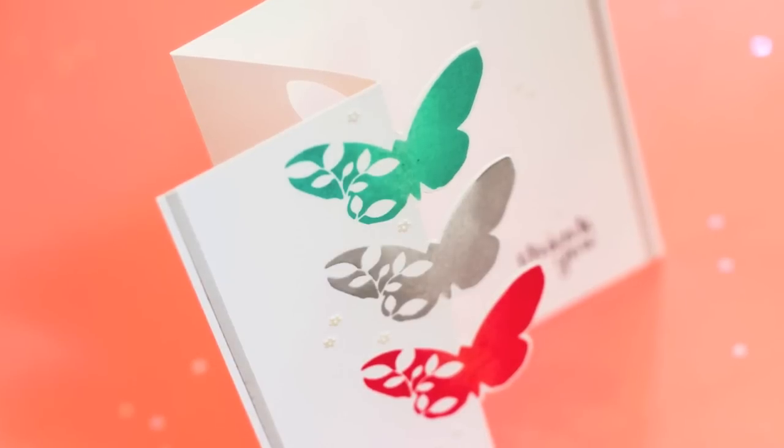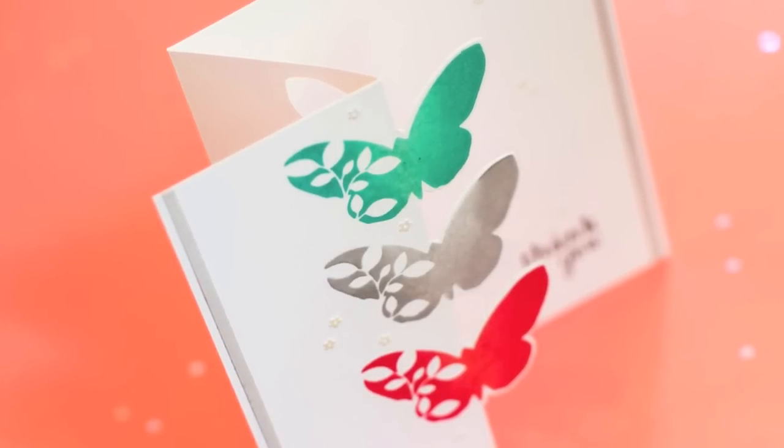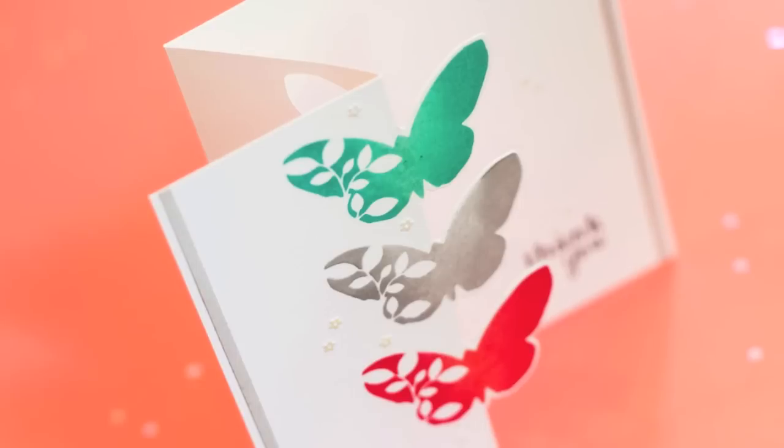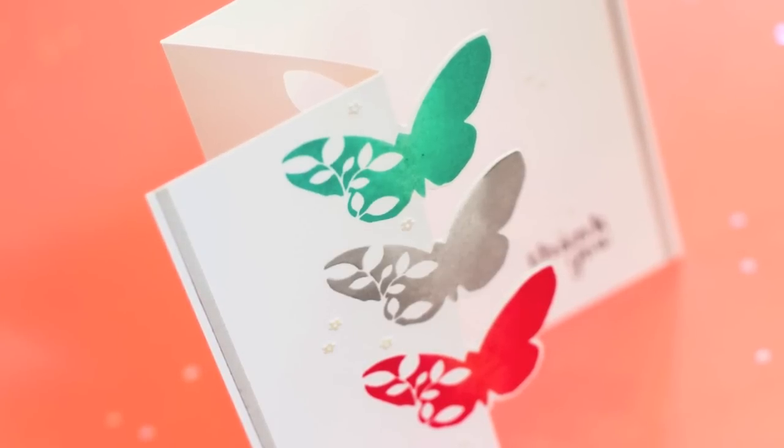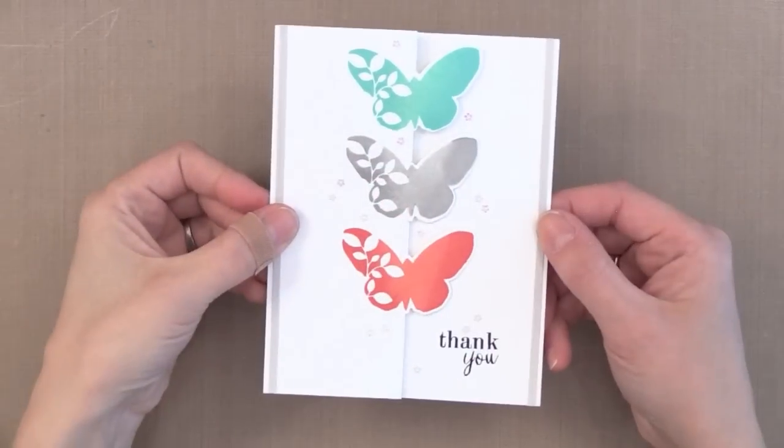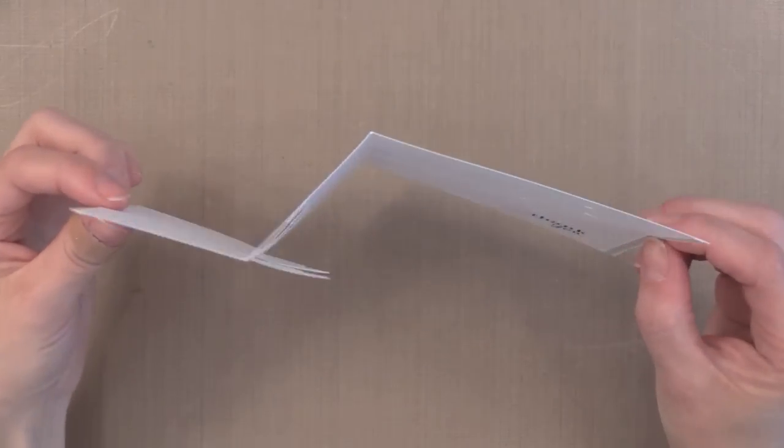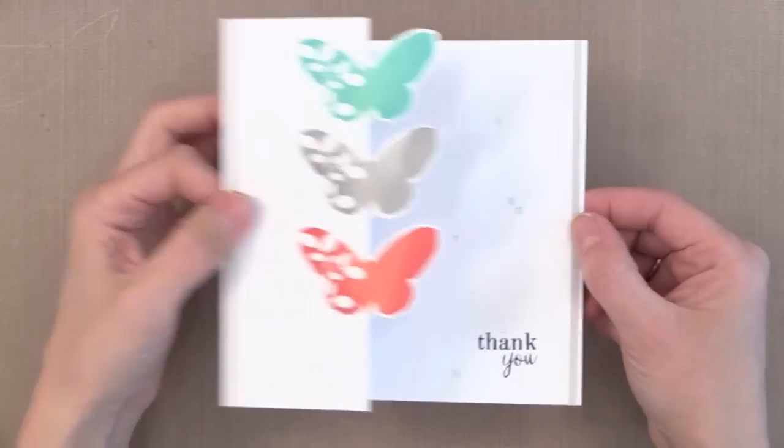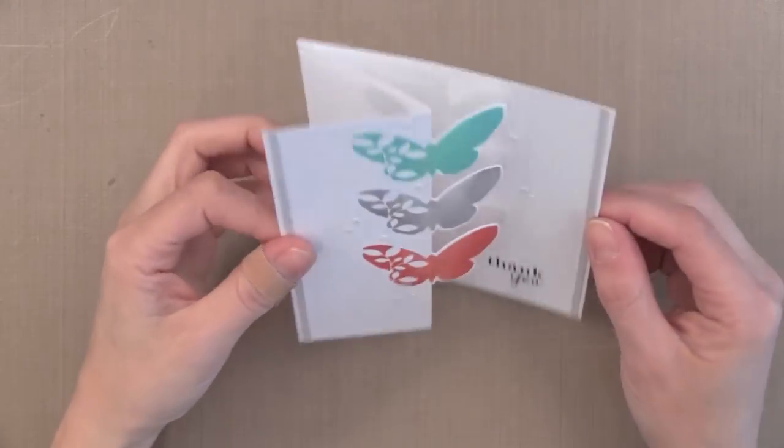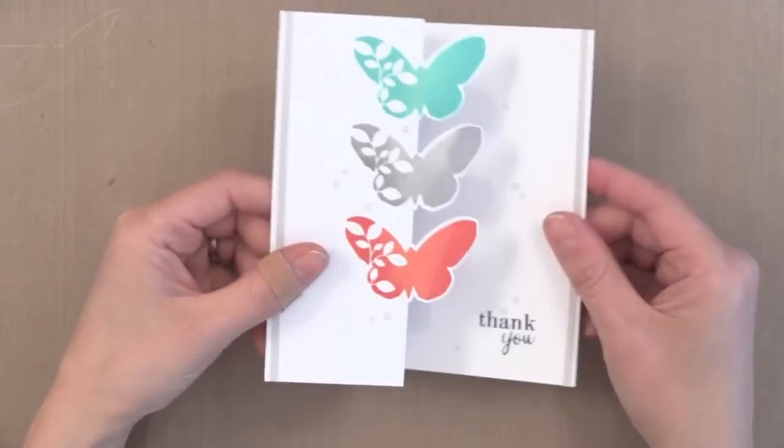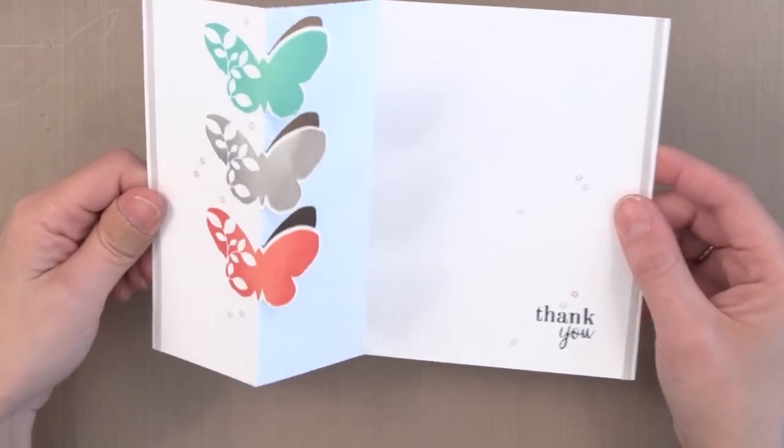You can see here what the zigzag fold looks like and also the partial die cutting that you get with the butterfly wings. Let me show you the completed card in action so you can understand how it's all going to come together. You just pull it open and there you have the card. It'll stand up on its own. You can see where the partial die cutting cuts the wings, so you can see those openings on the inside, but they are intact on the front of the card.